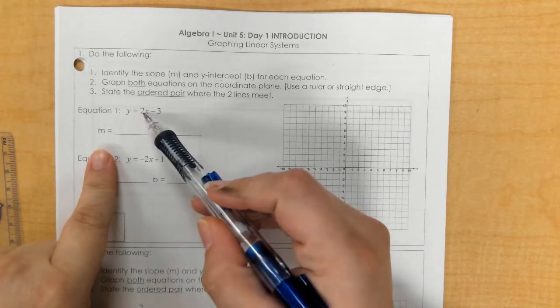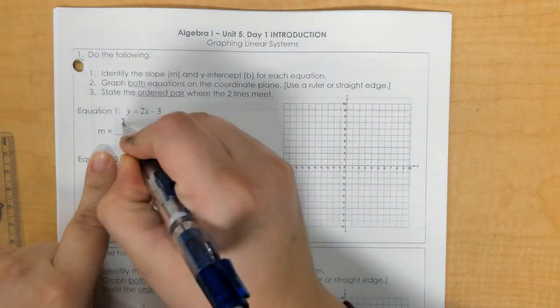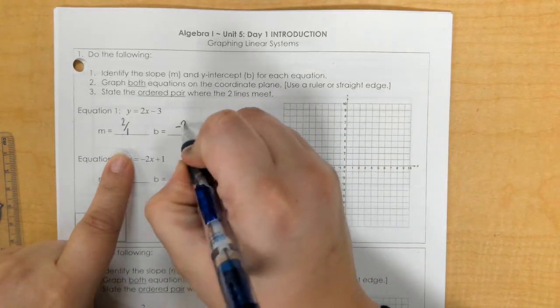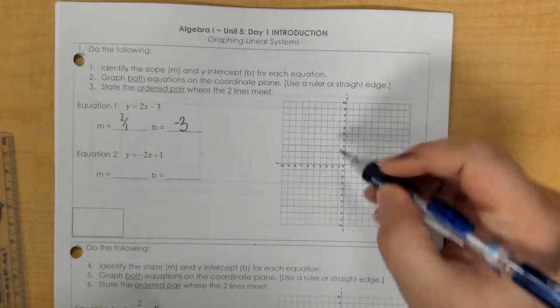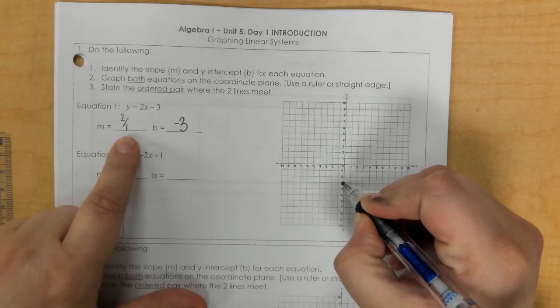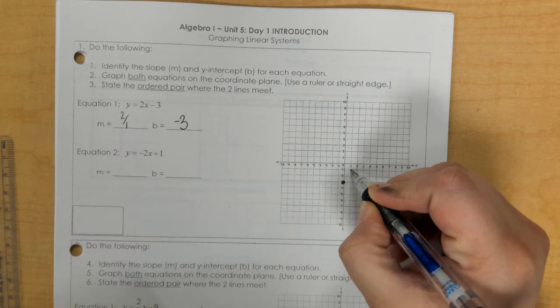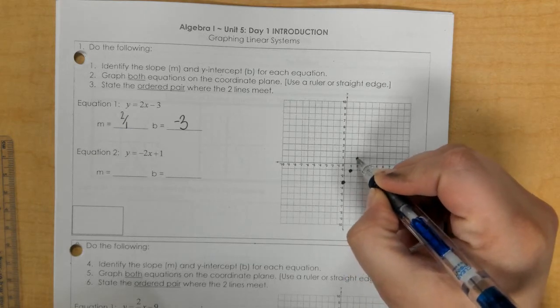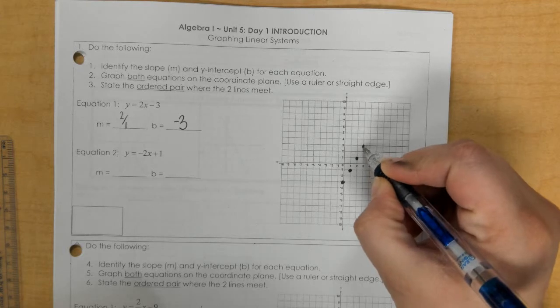So for slope, we have 2, and since we have to graph it, let's make it a fraction. And then our b is negative 3. So we would begin at negative 3 on the y-axis. And we would rise 2, run right 1. And then we would do that several times until we cover the entire graph.